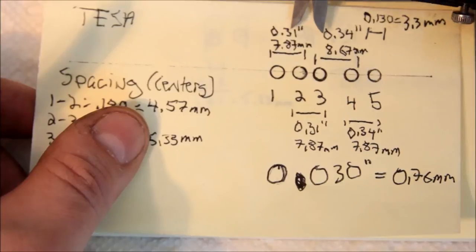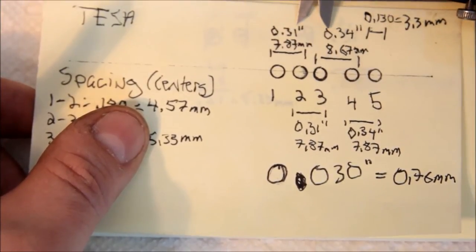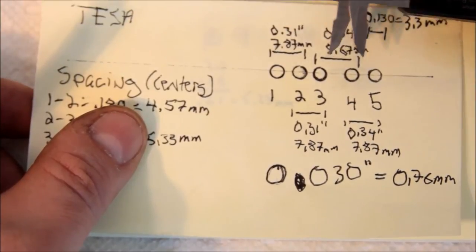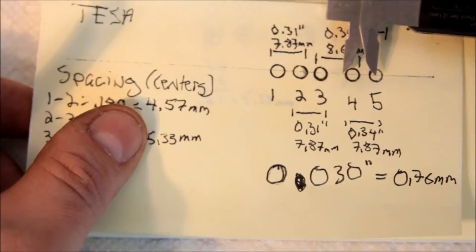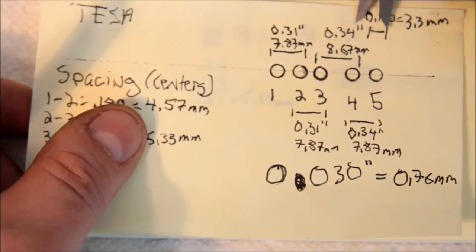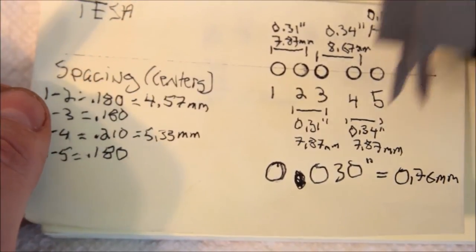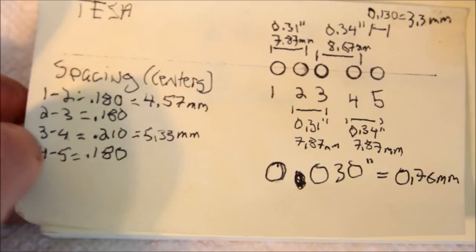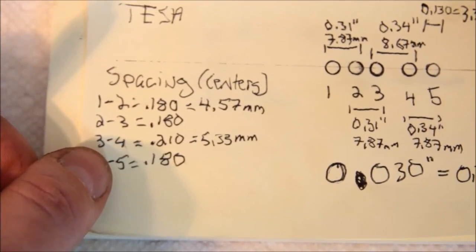So these spacings were this measurement from here to here. 0.31 inches or 7.87 millimeters on this and this. On the 3 to 4 spacing is 0.34 inches or 8.67 millimeters. And so that gives us a difference of 0.30 millimeters on the spacing. And then you can see it here in a different format of the table.